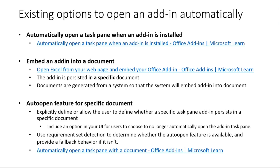We also have an auto-open feature for a specific document where the add-in can control whether to persist the auto-open behavior or not. We can control that behavior through either XML settings or the underlying add-in code, so the user can choose whether they want the add-in to be automatically launched next time. This feature is still for a specific document — if you want other documents to auto-launch the same add-in, you cannot do it with this feature. The benefit is that customers can leverage add-in code to turn on or turn off this auto-open capability.